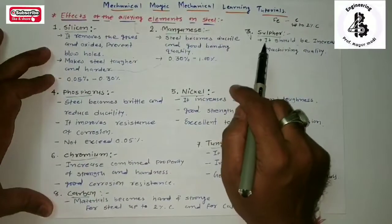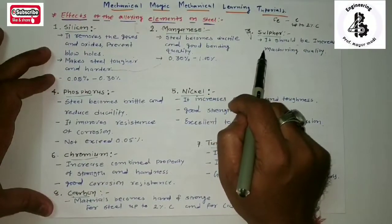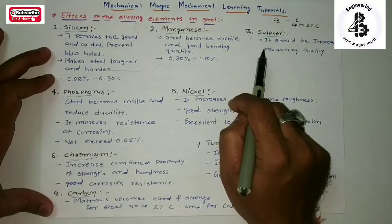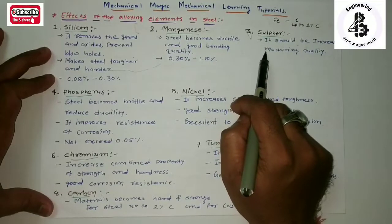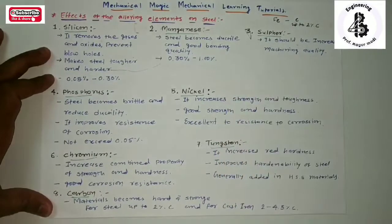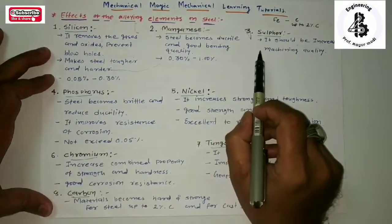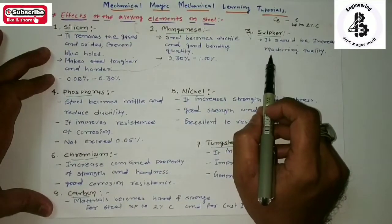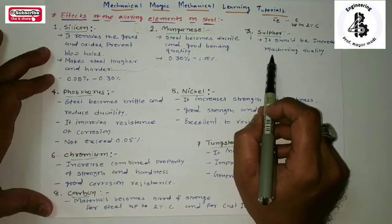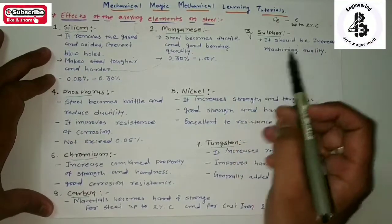Third element: sulfur. By the addition of sulfur, the machining quality increases. If a material is harder, it is difficult to machine. By the addition of sulfur, machining becomes an easier process. So sulfur increases the machining characteristics of the materials.